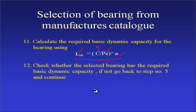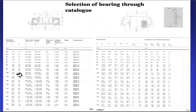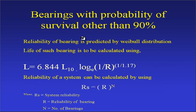Check whether the selected bearing has the required basic dynamic capacity. If the available C from the catalog is greater than or equal to the required C calculated from the load-life relationship, the bearing is acceptable. If not, go back and select the next series of bearing and repeat the process.